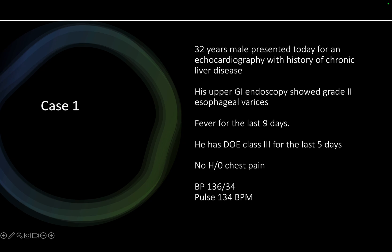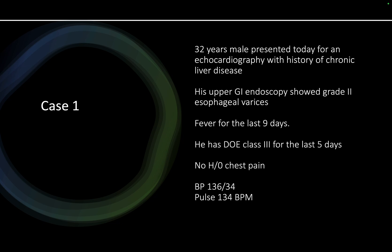This gentleman was 32 years old male and presented for echocardiography with a history of chronic liver disease. His upper GI endoscopy done about two weeks back showed grade 2 esophageal varices, and there is fever for the last about nine days. He has dyspnea on exertion for the last about three days — class three — lasting about five days. There is no history of chest pain or sudden sweating indicative of myocardial infarction. Blood pressure was 136/34 with a very wide pulse pressure, and he had all other features of a collapsing pulse. Heart rate was about 134.